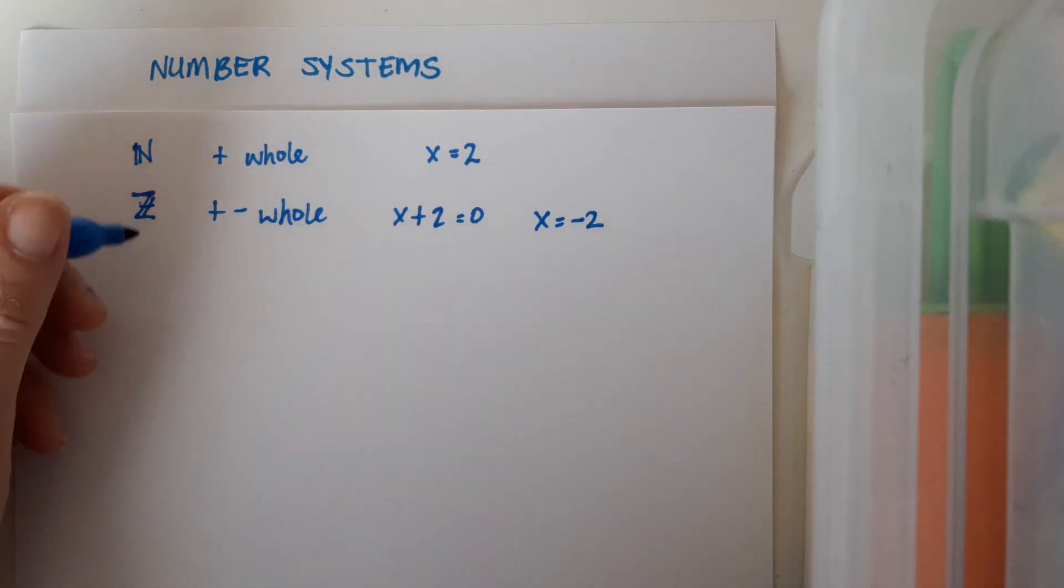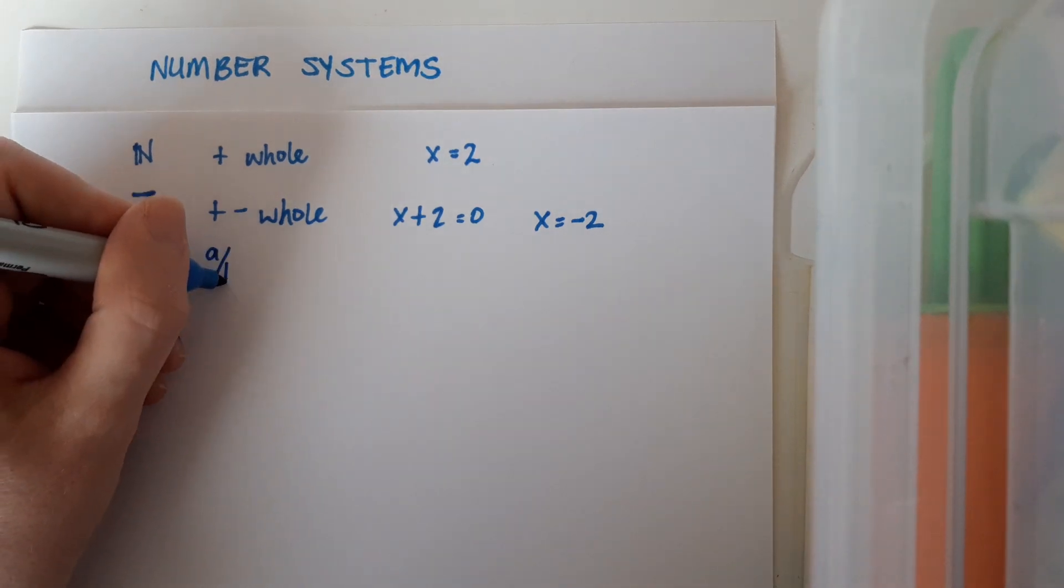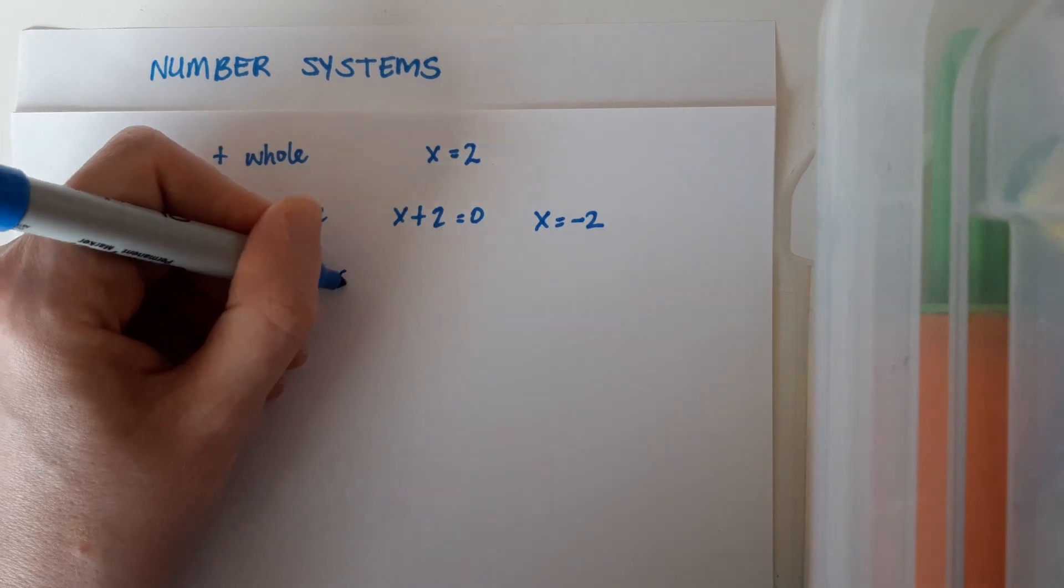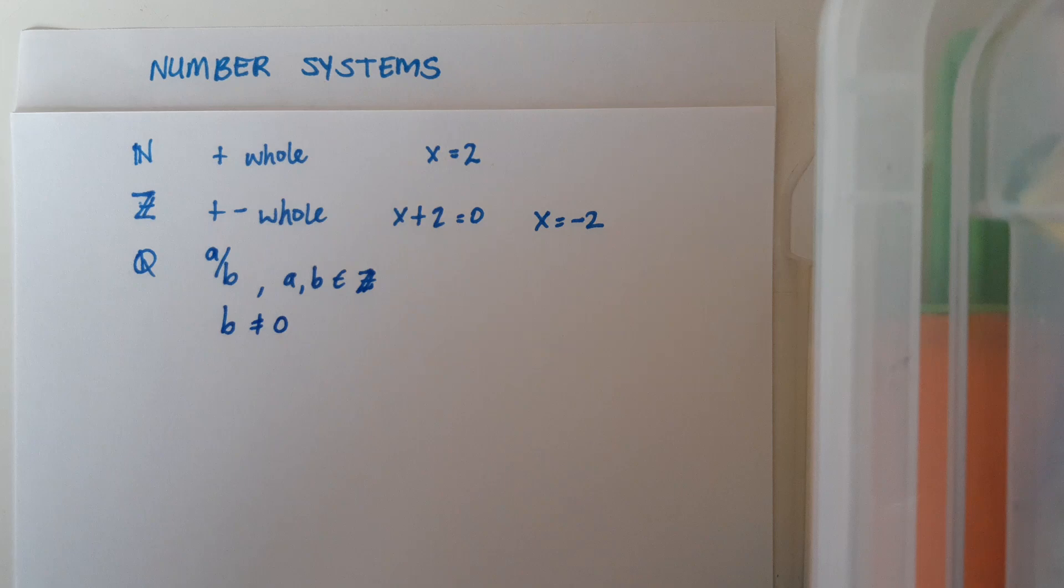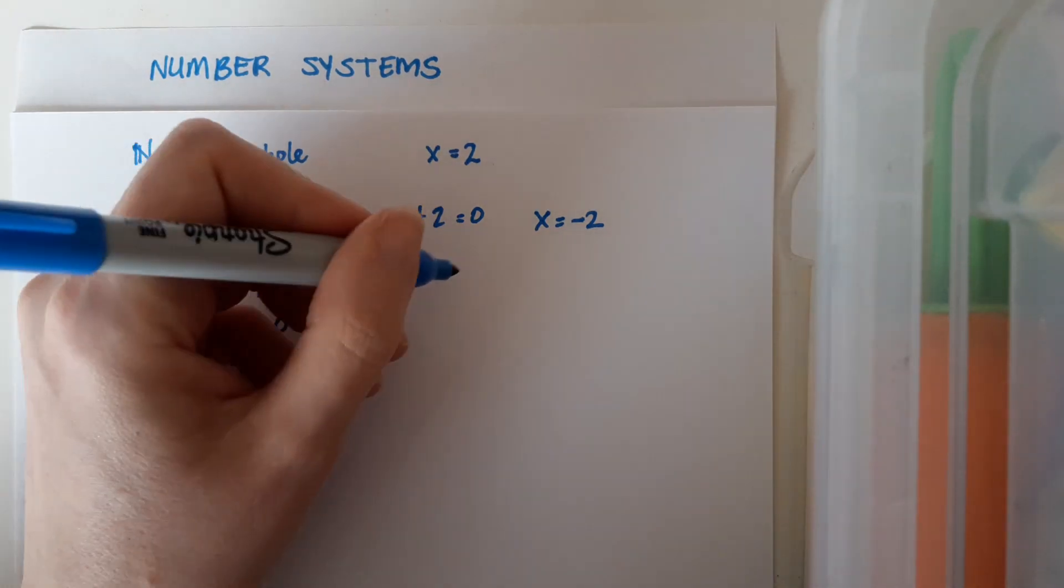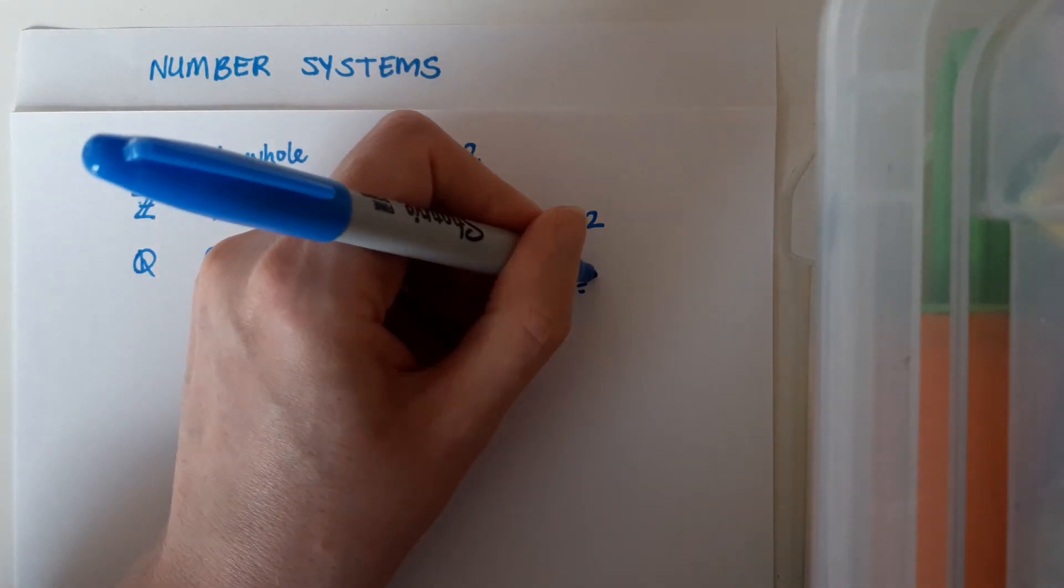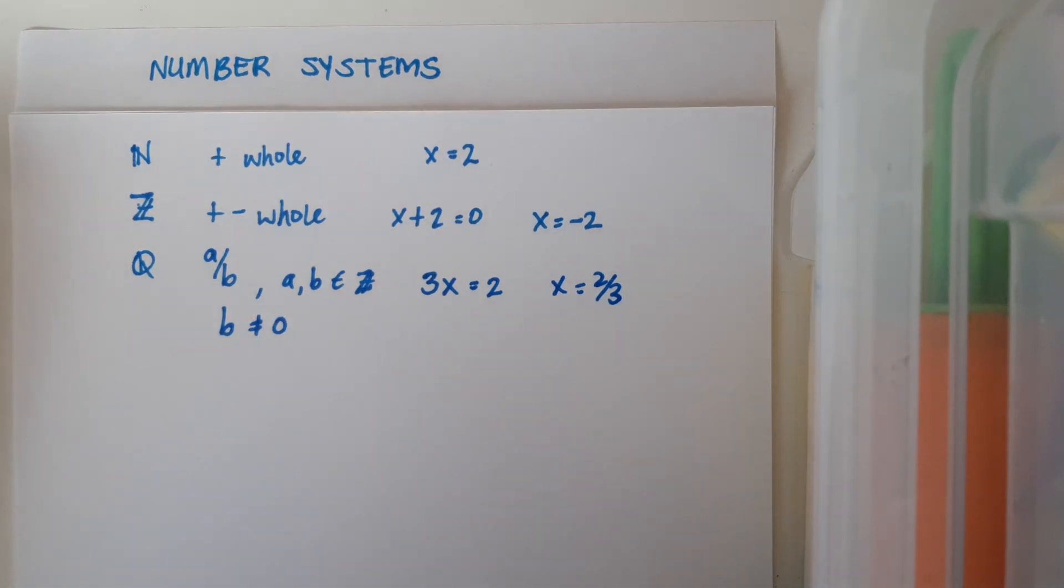But that still doesn't cover everything because we might have rational numbers. They're represented by the symbol Q, and that's coming from the word quotient. They are numbers that can be written in the form A over B, where A and B are themselves integers. But B, of course, can't be 0 because we can't divide by 0 within a fraction. And they would solve equations like 3x equals 2. So my solution there would be x equals 2 over 3, which is an element of the rational number set.